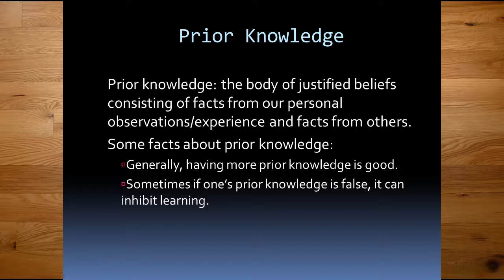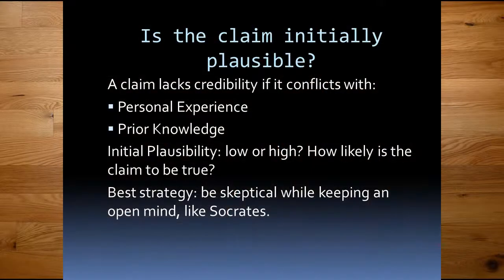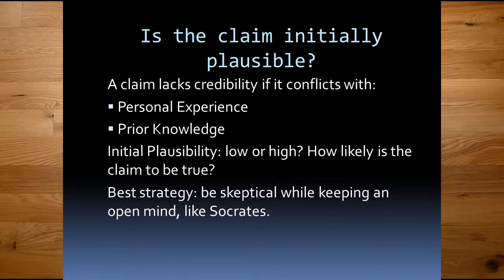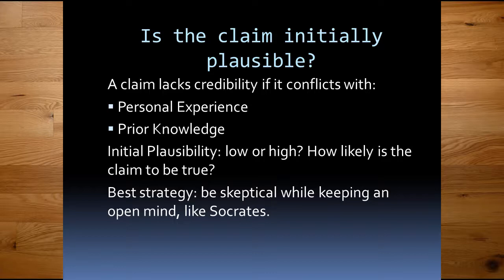Something that interacts with prior knowledge is what we call initial plausibility — how reasonable a claim is when you first hear it. The Tyrannosaurus rex claim was not initially plausible because it conflicted immediately with prior knowledge. On the other hand, the claim that ducks mate for life is initially plausible — there's nothing in the laws of physics that precludes that possibility. If I said a new zombie show is going to be added to Netflix next month, that's initially plausible considering how many shows Netflix adds all the time.